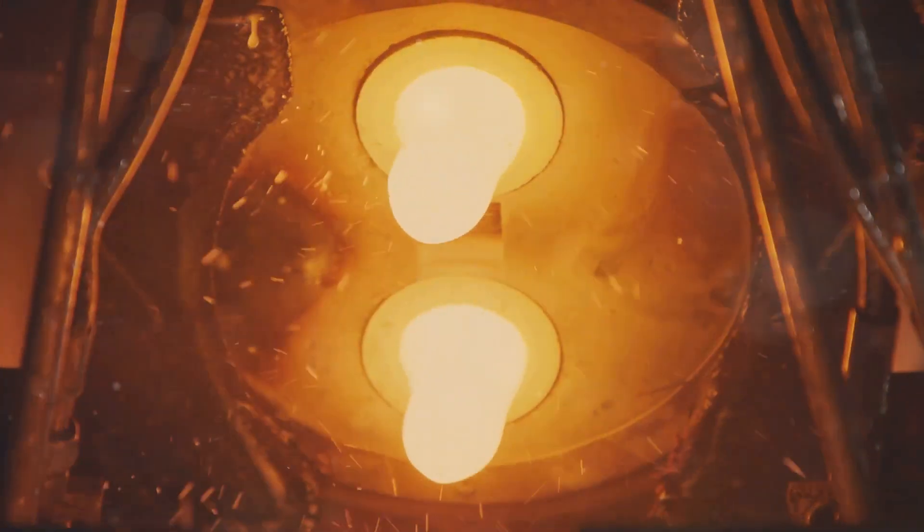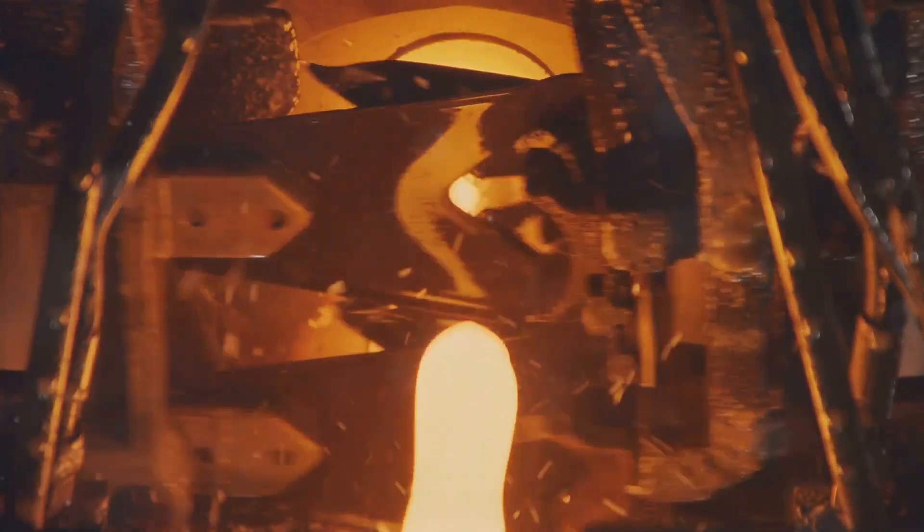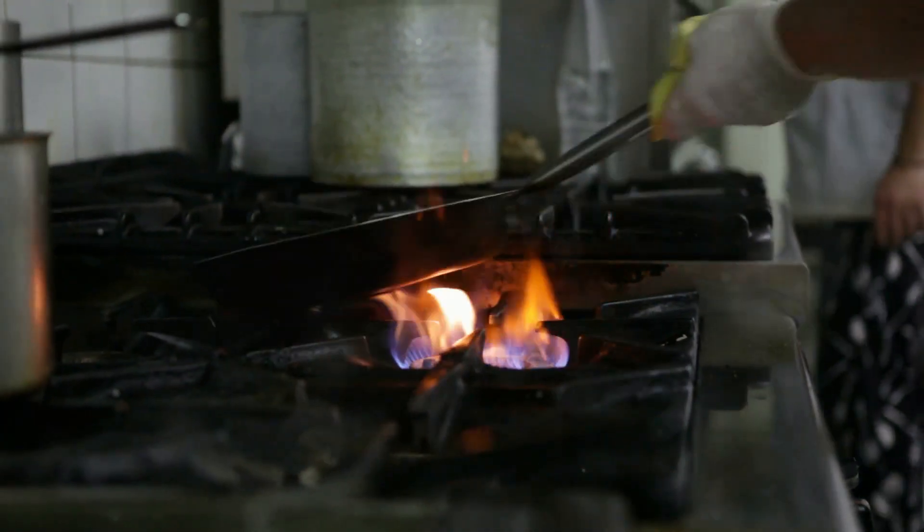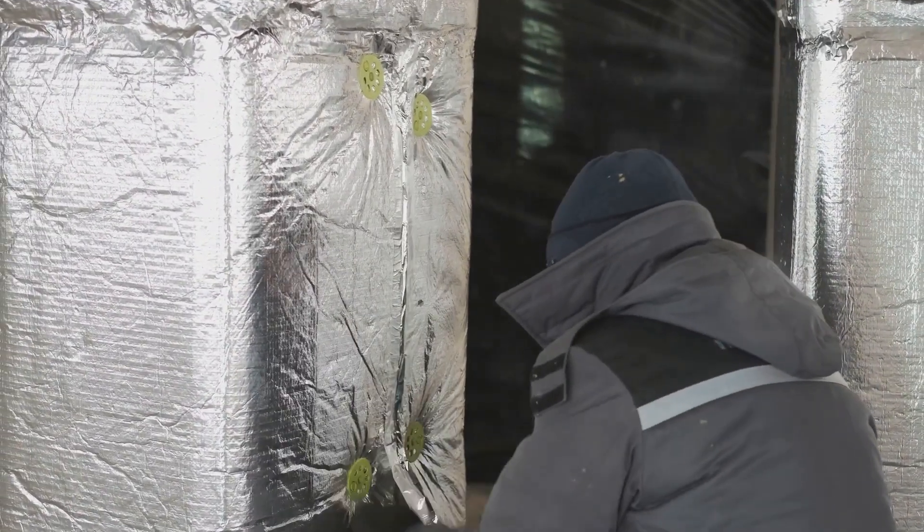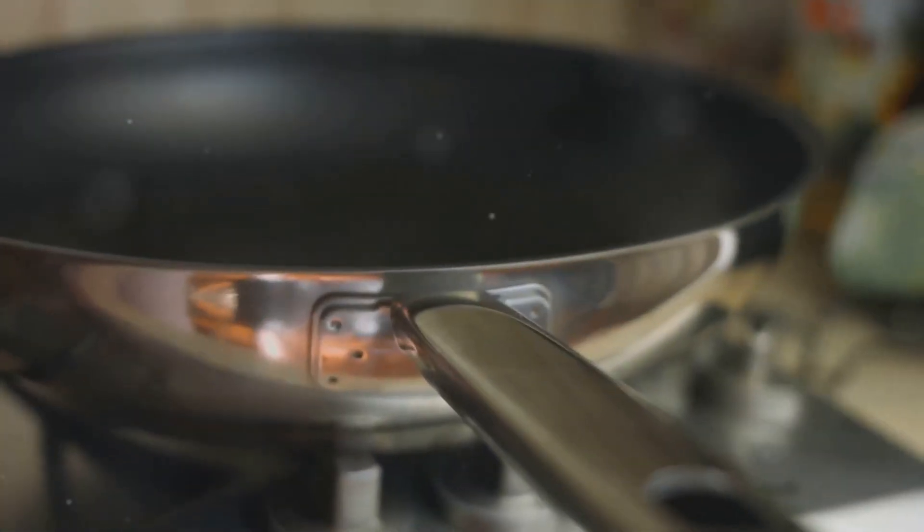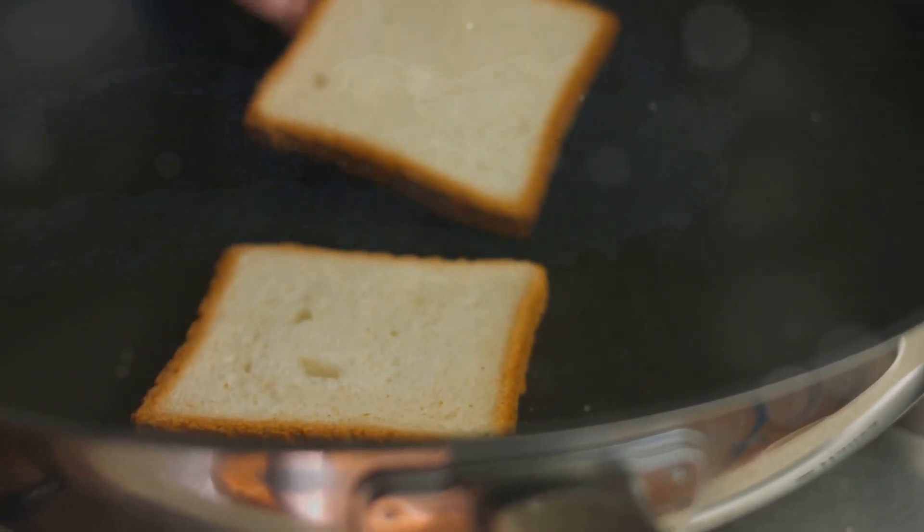Metals, with their tightly packed atoms, are excellent conductors. Think of a frying pan heating up quickly on a stove. Insulators, like wood or rubber, have lower thermal conductivity. They resist the flow of heat, making them ideal for handles on cookware.